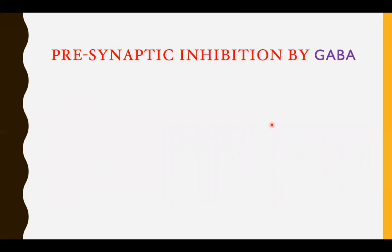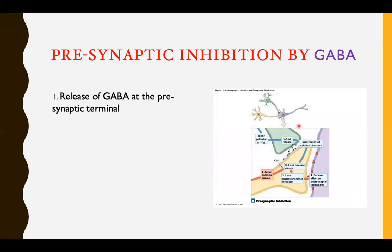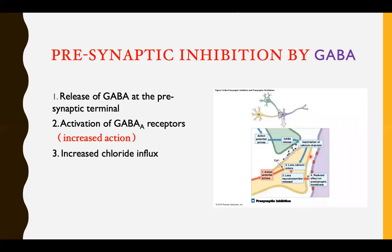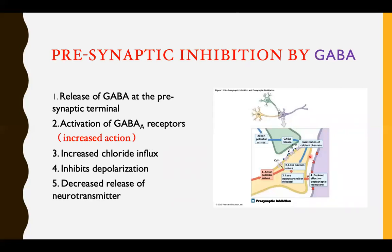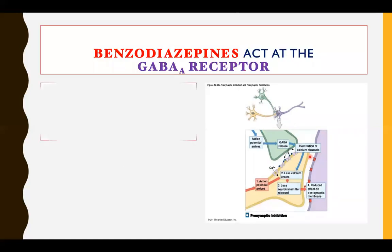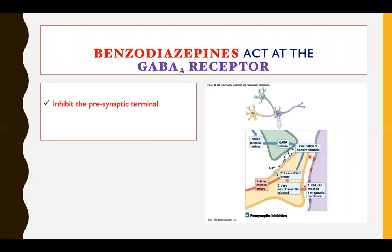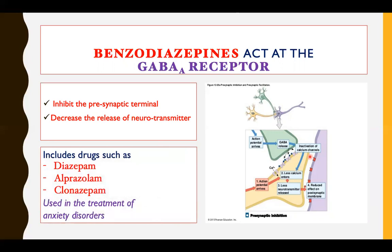How does presynaptic inhibition by GABA occur? Once GABA is released, it binds to GABA receptors on the presynaptic neuron and increases chloride influx. This leads to hyperpolarization or decreased depolarization, resulting in decreased release of neurotransmitter. Benzodiazepines act on the GABA-A receptor to inhibit the presynaptic terminal, including drugs such as diazepam, alprazolam, and clonazepam, used in the treatment of anxiety disorders and for insomnia.